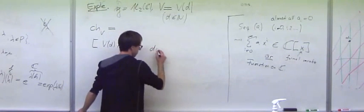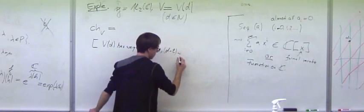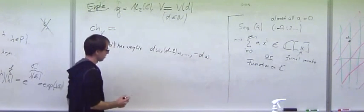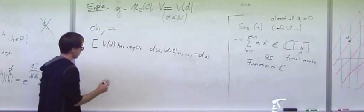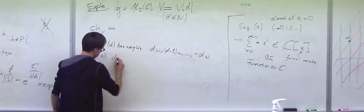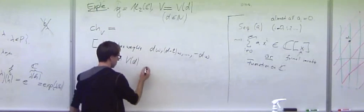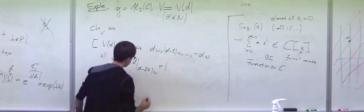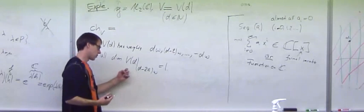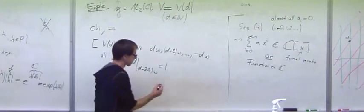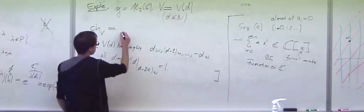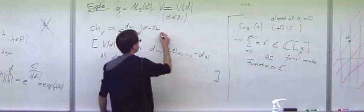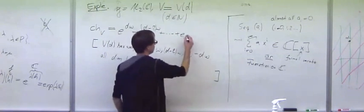The weights are D omega, D minus 2 omega, and so on, up to minus D omega. This was an exercise, and all dimensions of these D minus 2k omega are one, because these weight spaces are just the one-dimensional vector spaces generated by one of the monomials. So in this case, it's easy to write down the character. E to the D omega plus E to the D minus 2 omega plus, and so on, plus E to the minus D omega.